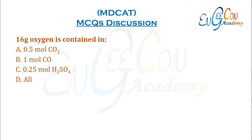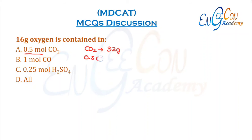The first MCQ says: 16 grams of oxygen is contained in which compound? If we look at 1 mole of CO2, then there are 2 atoms of oxygen, or 32 grams of oxygen present. If we take 0.5 moles of CO2, then there will be half of oxygen, or 16 grams present. So this is correct.